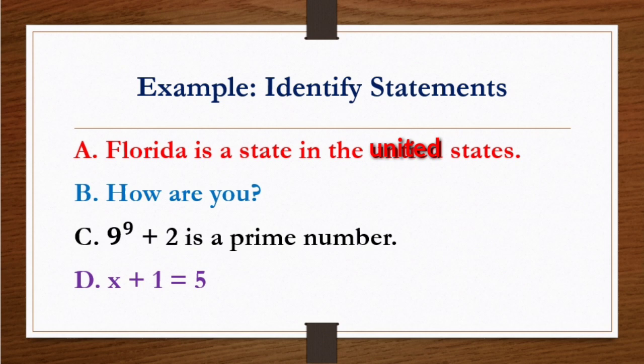Here are our four examples. First: 'Florida is a state in the United States.' Second: 'How are you?' Third: '9 raised to 9 plus 2 is a prime number.' And number four: 'x plus 1 is equals to 5.' Let's go through the rationale for each of these four examples.